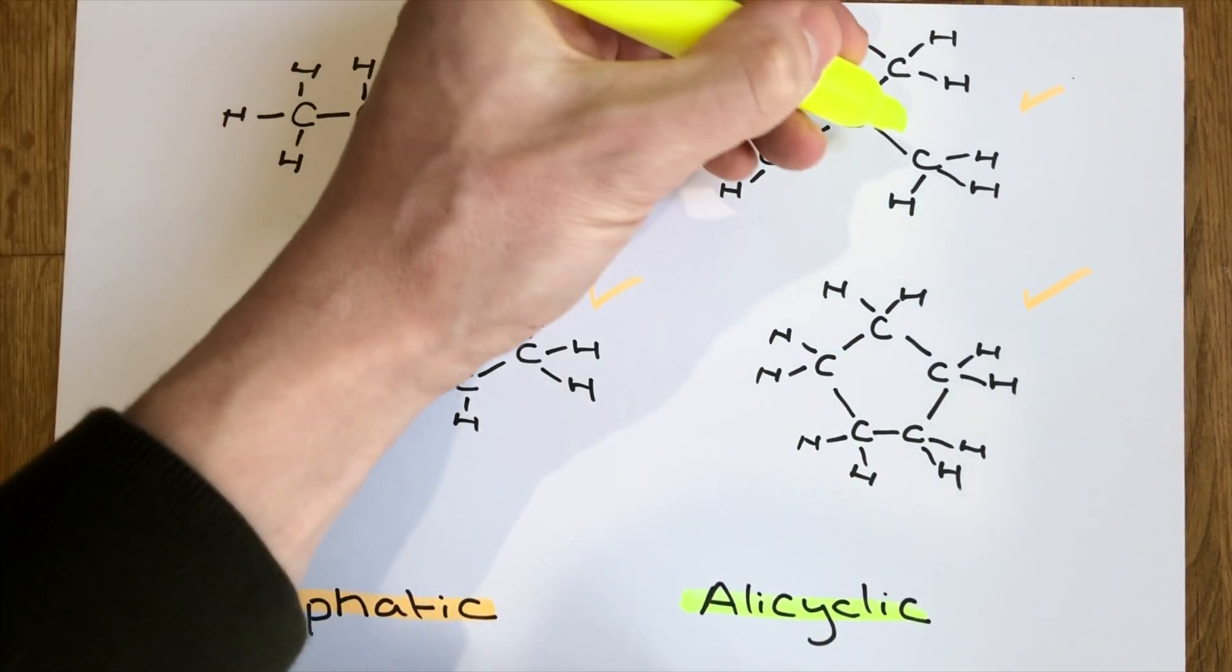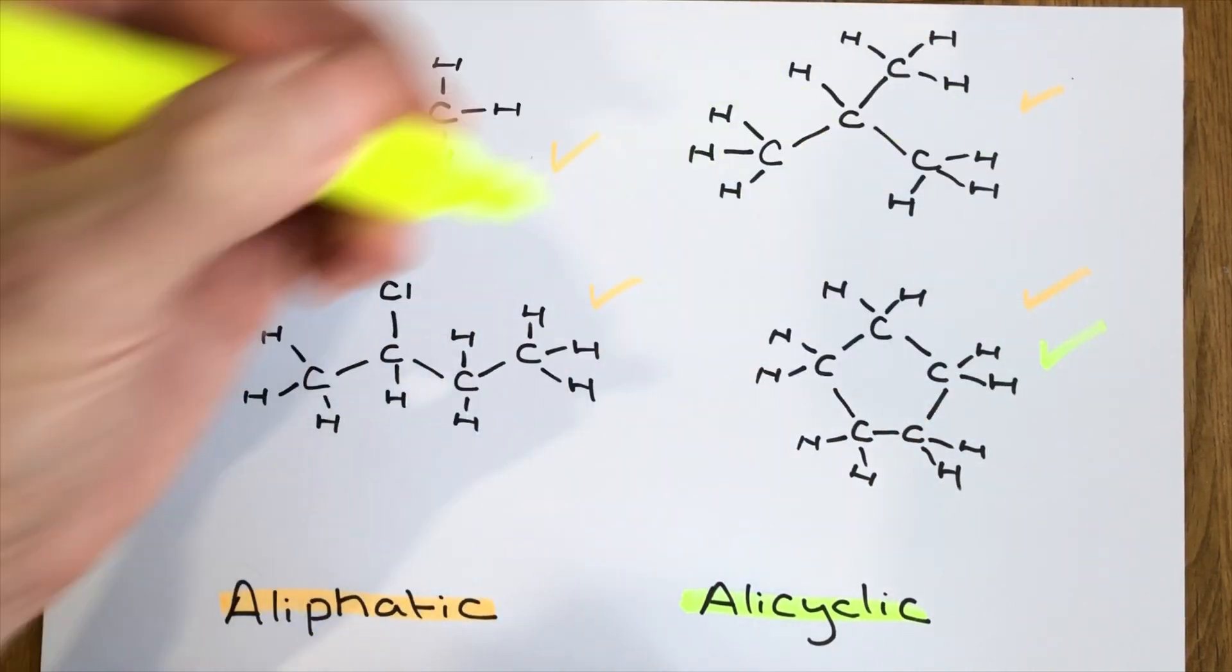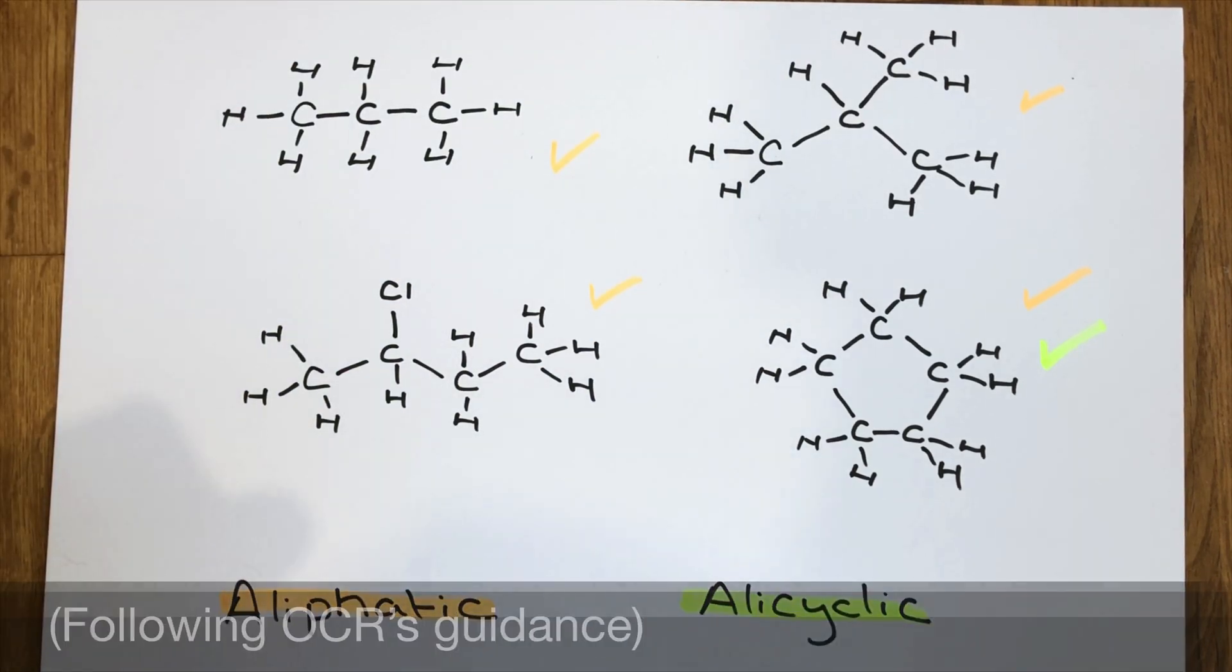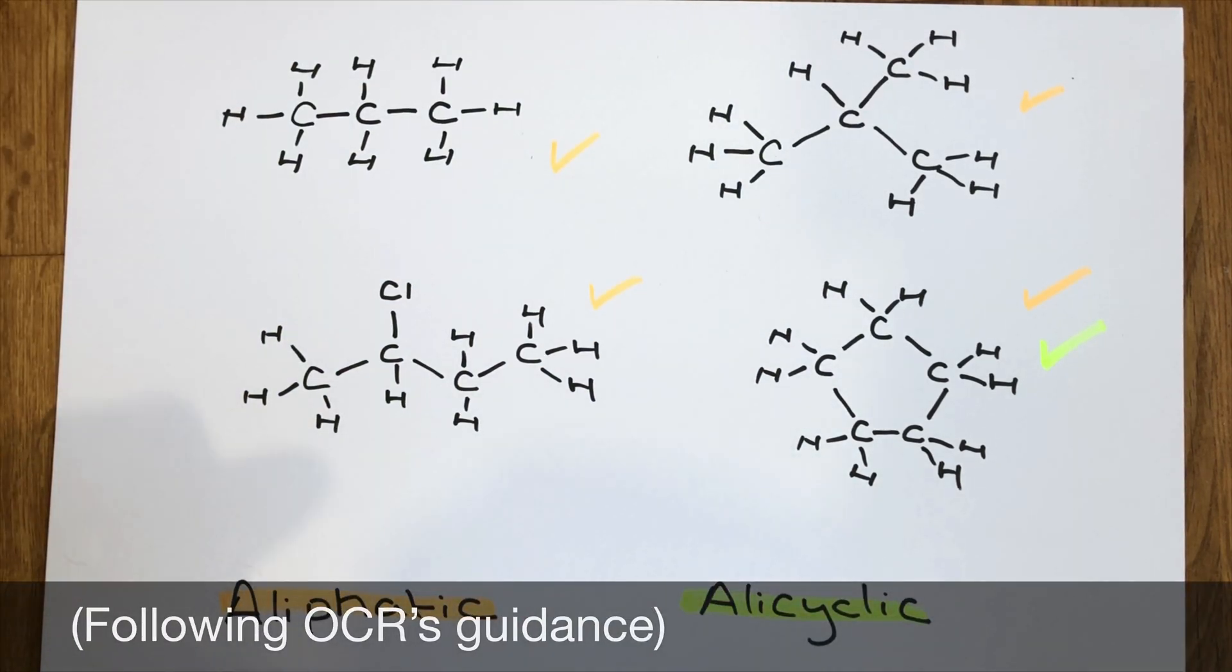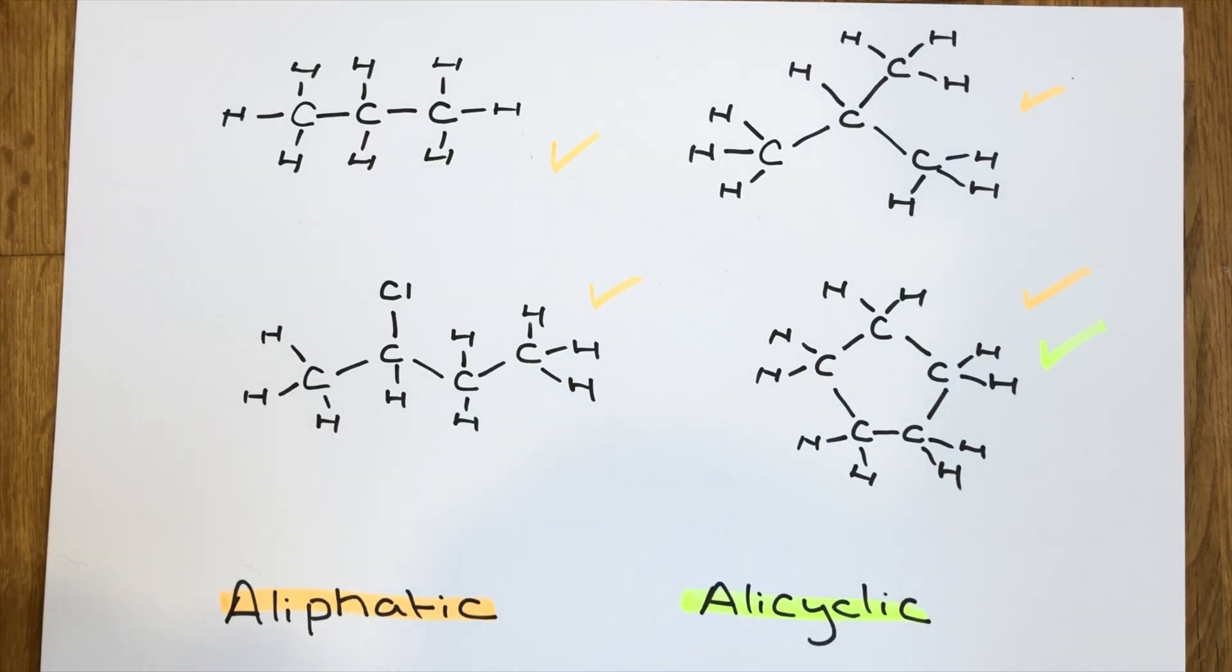However, not all of them are examples of alicyclic molecules. In fact, it's just this one here. So the one in the bottom right, which is actually called cyclopentane, is the only example here on the page of an alicyclic structure. So alicyclics are always aliphatics, but aliphatics are not always alicyclics.